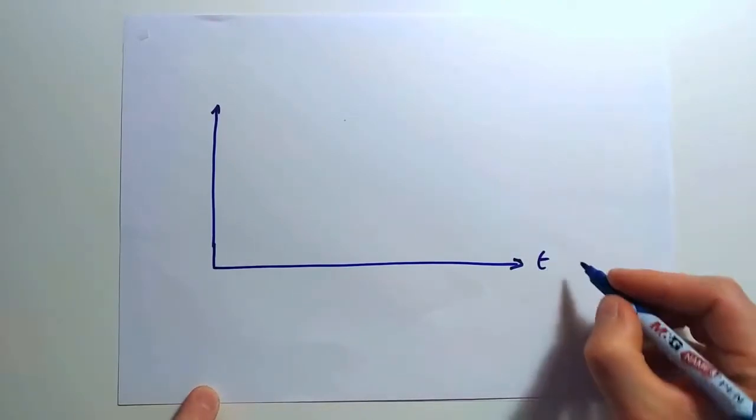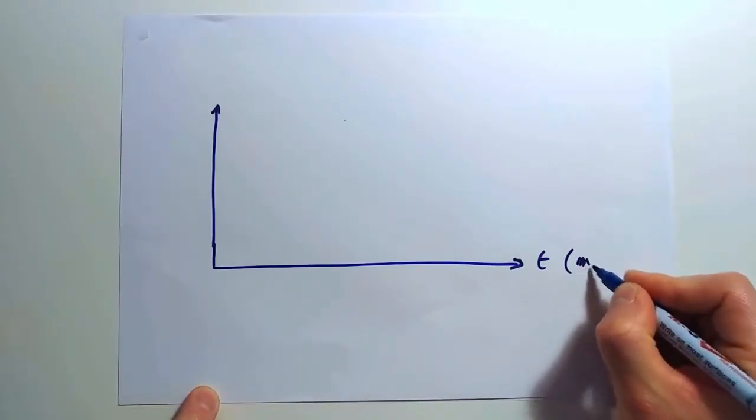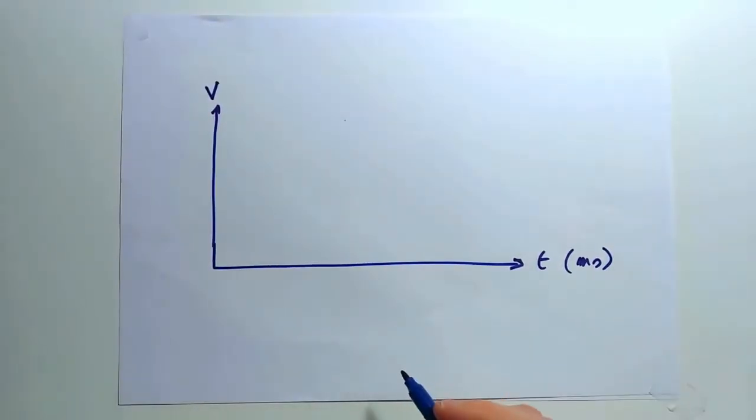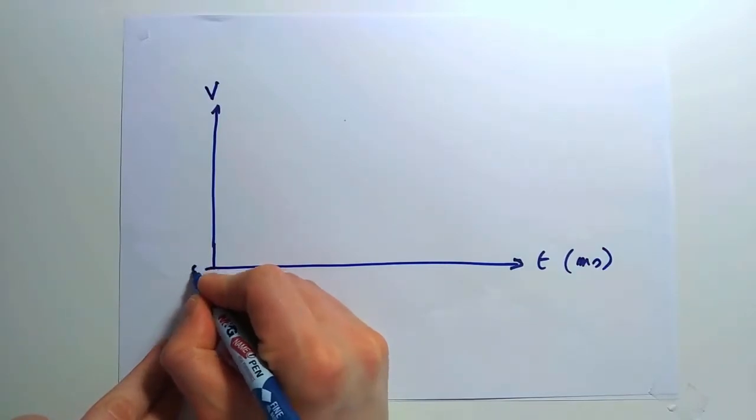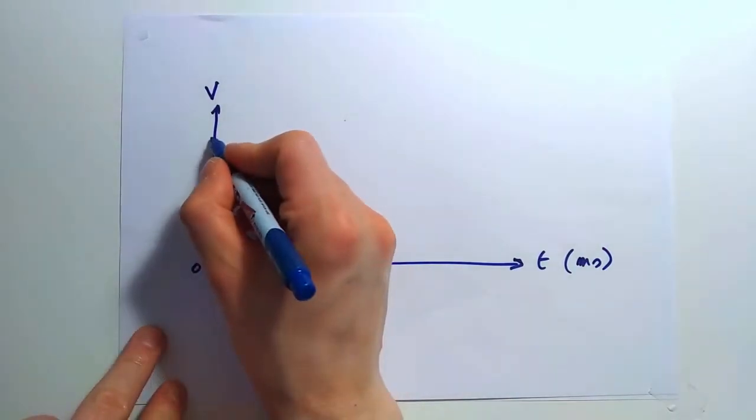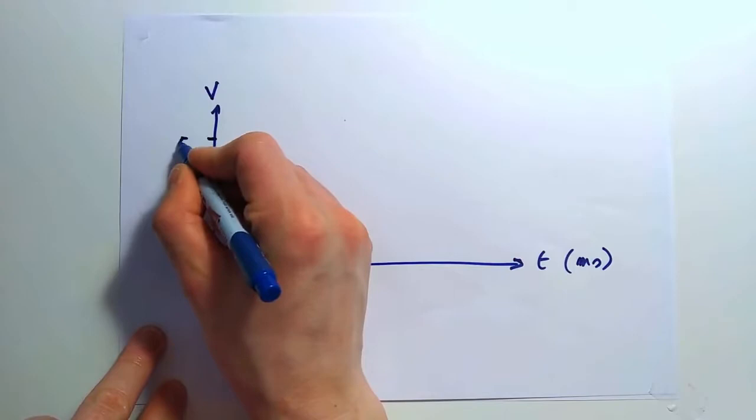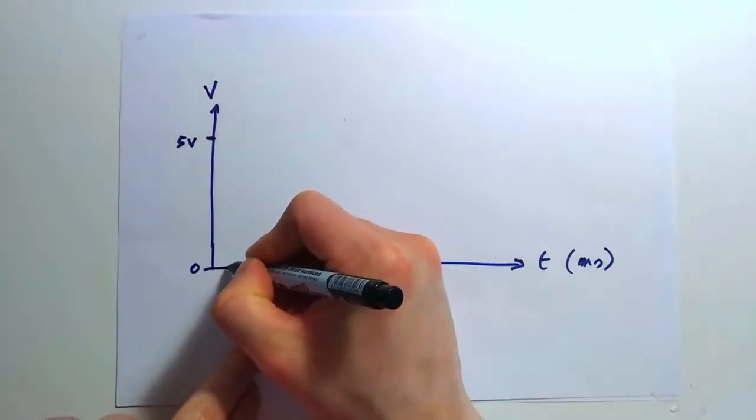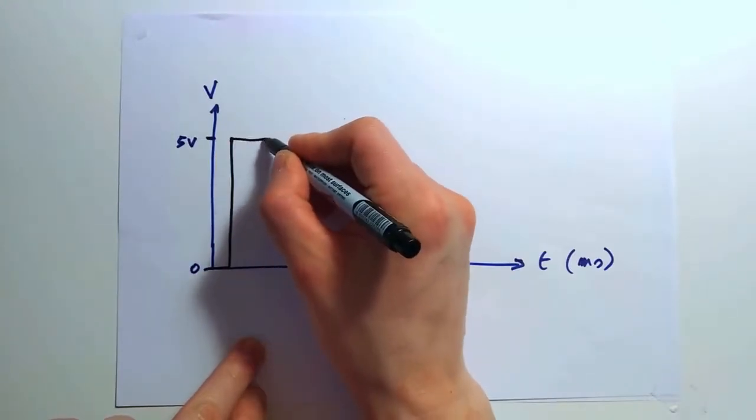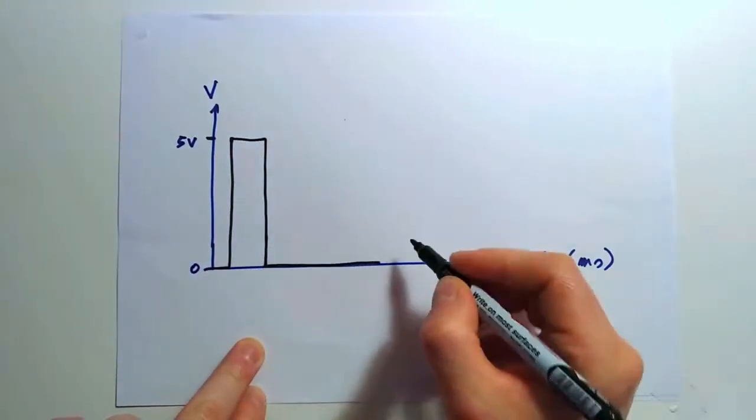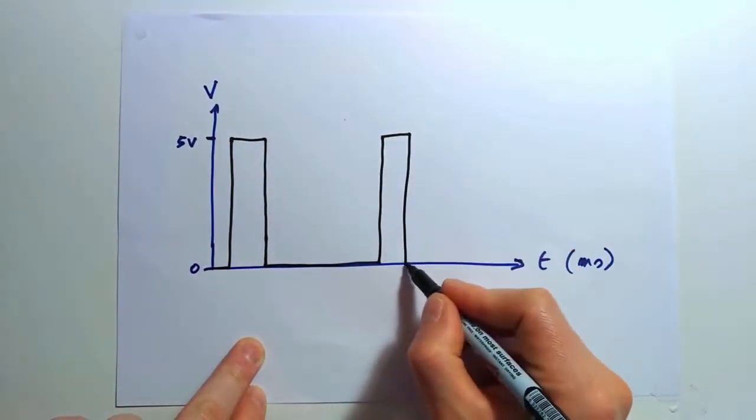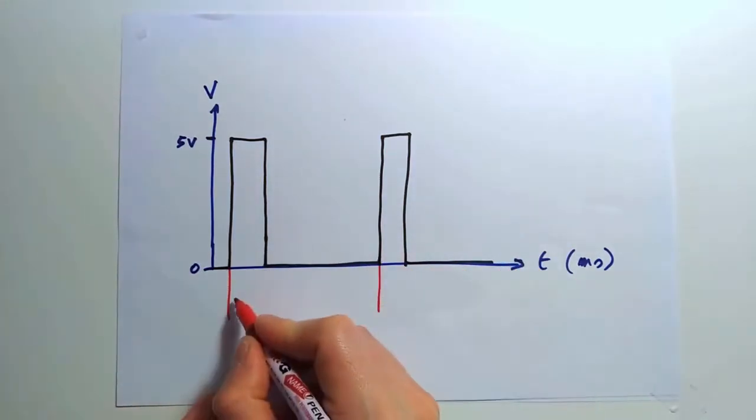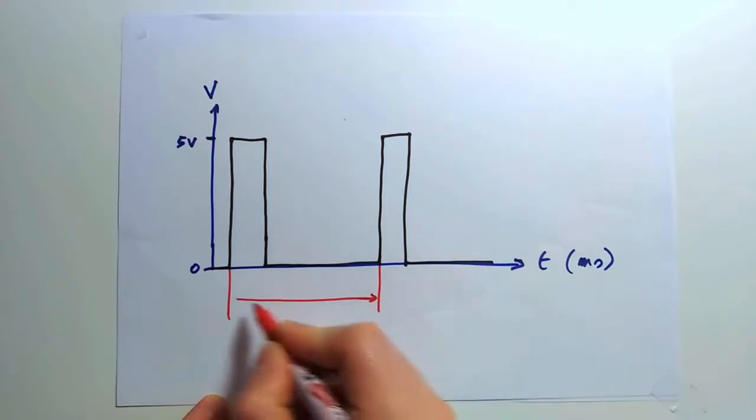The upper limit is 5 volts as most servos use this level. Now consider these repeating pulses. The time in between these pulses is fixed. We'll call this the period. This is represented by the letter T. The length of the pulse, we call the pulse width.